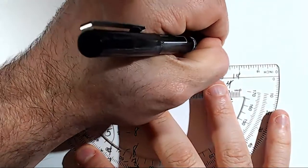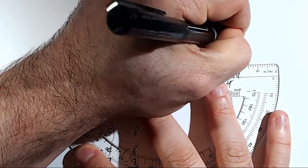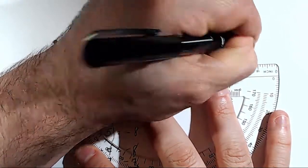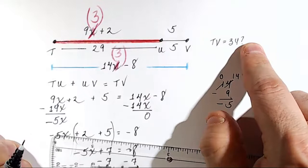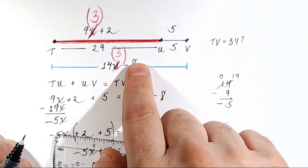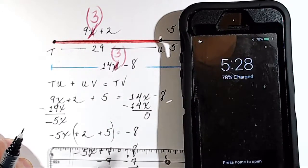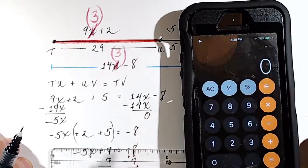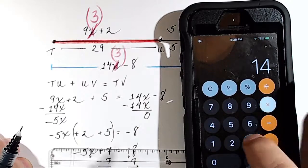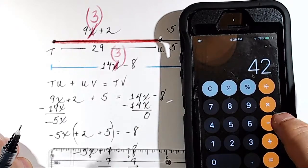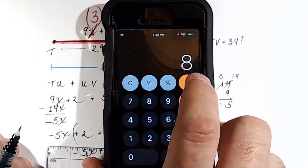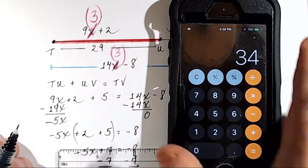So here's what we think. We think TV is equal to 34. Let's check that. Because if that's correct, I should be able to multiply 14 times 3, then subtract 8 from that product, and I should get 34. Let's try it. 14 times 3 is 42. 42 minus 8. What are we looking for? 34? Cross your fingers. Oh! It's 34.